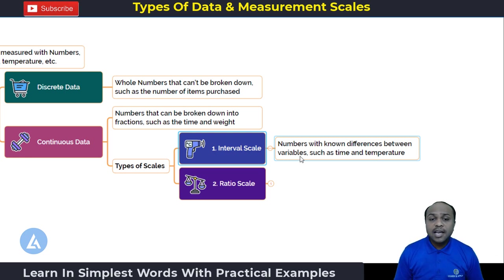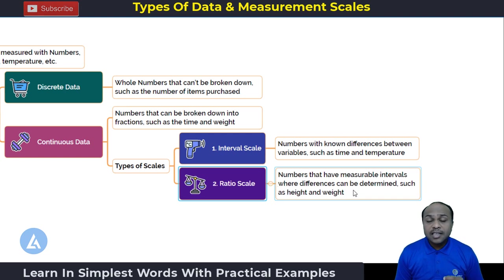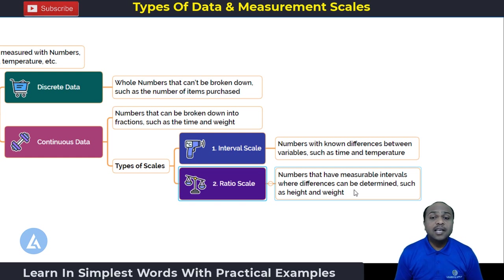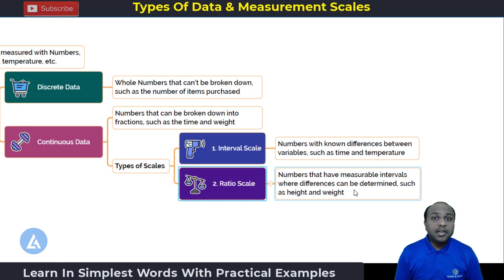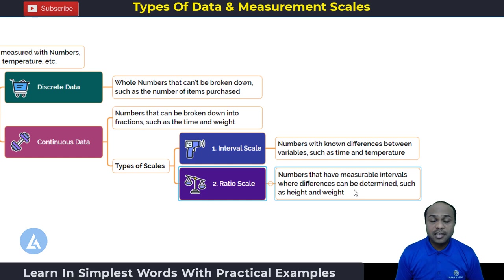The second scale is the ratio scale. In the ratio scale, numbers have measurable intervals where the differences can be determined, such as height and weight — we can also calculate the difference between two entities. So this completes the first part on quantitative data: there are two types — discrete data and continuous data — and with continuous data, we have two important measurement scales: interval scale and ratio scale.